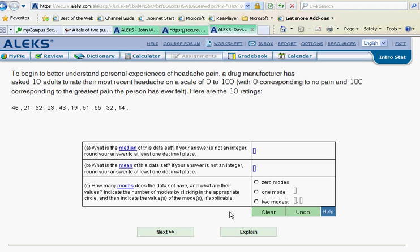To better understand personal experiences of headache pain, a drug manufacturer has asked 10 adults to rate their most recent headache on a scale of 0 to 100. Here are the 10 ratings, so we can see these numbers here.